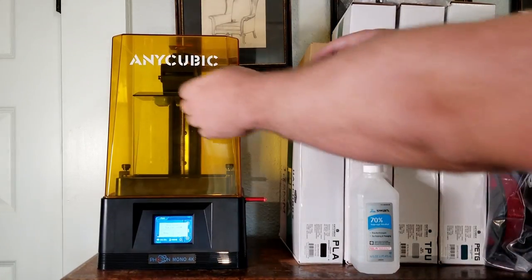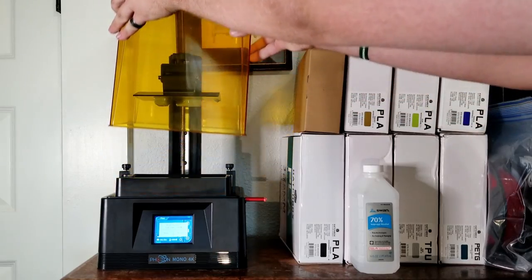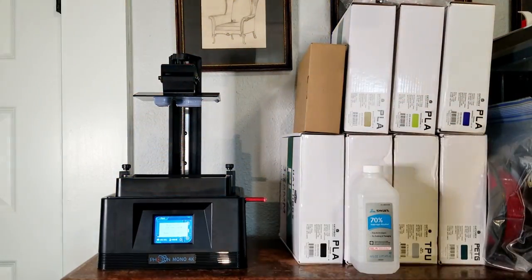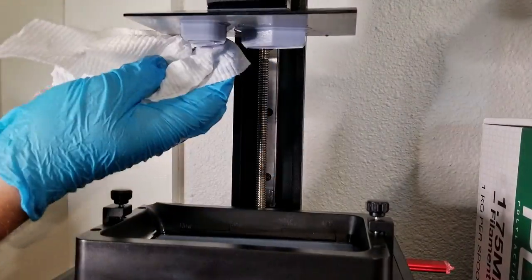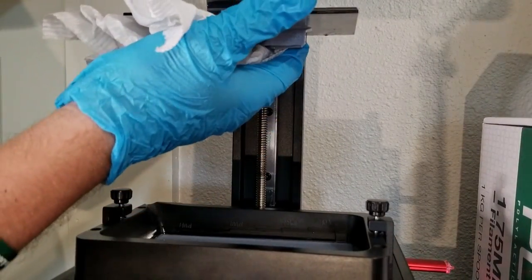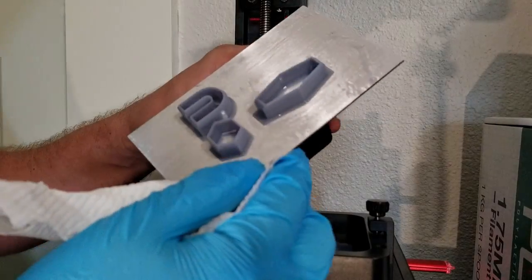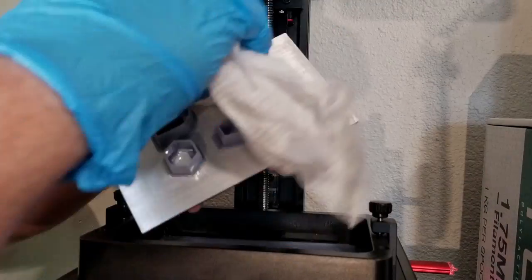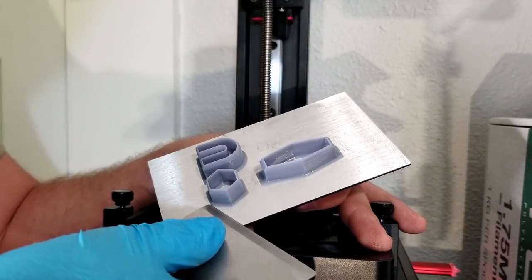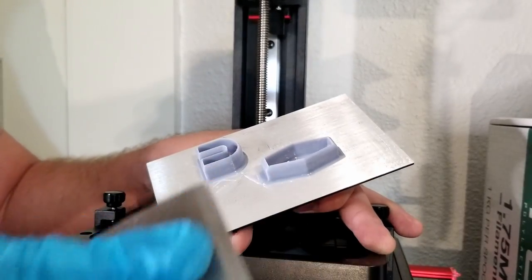So this print took a couple of hours, but with the magic of video editing, it is all done. Let's see how it turned out. First I cleaned them off with a paper towel and some rubbing alcohol and gloves, definitely gloves. So far, super happy with these. They look nice and sharp, maybe a little bit brittle, but putting them under our UV light might help to cure them fully.